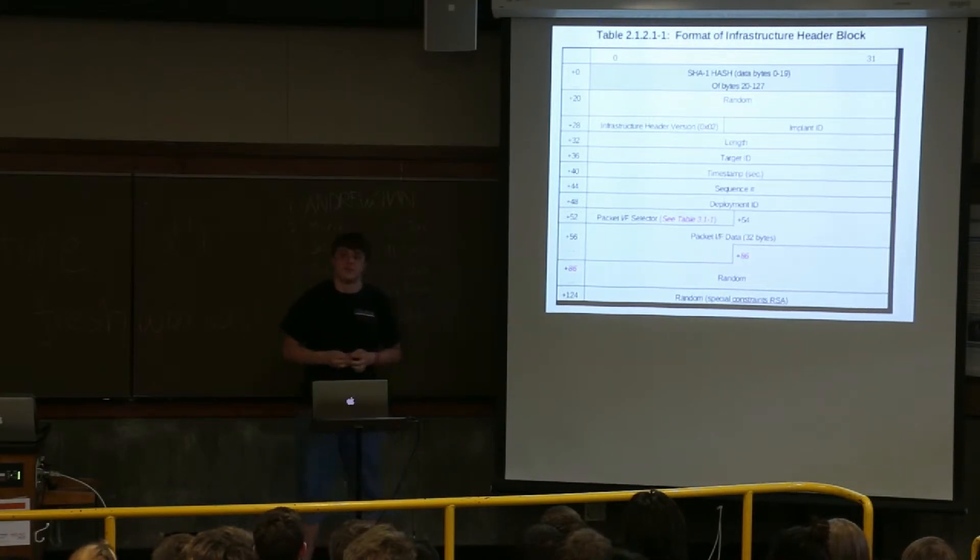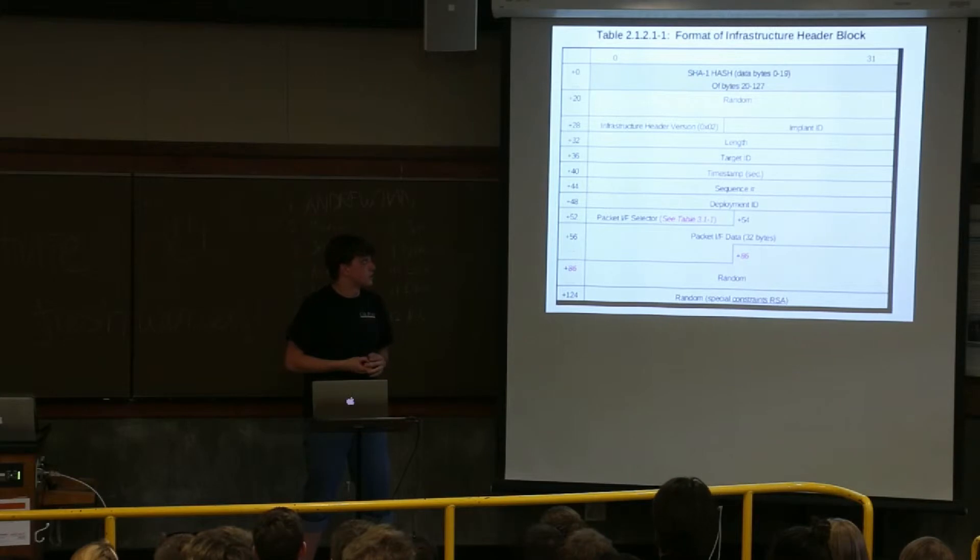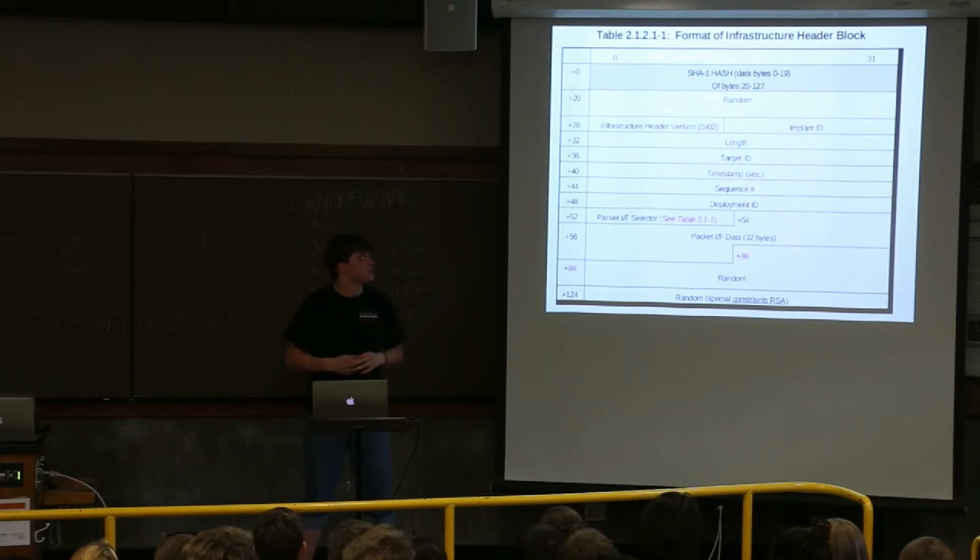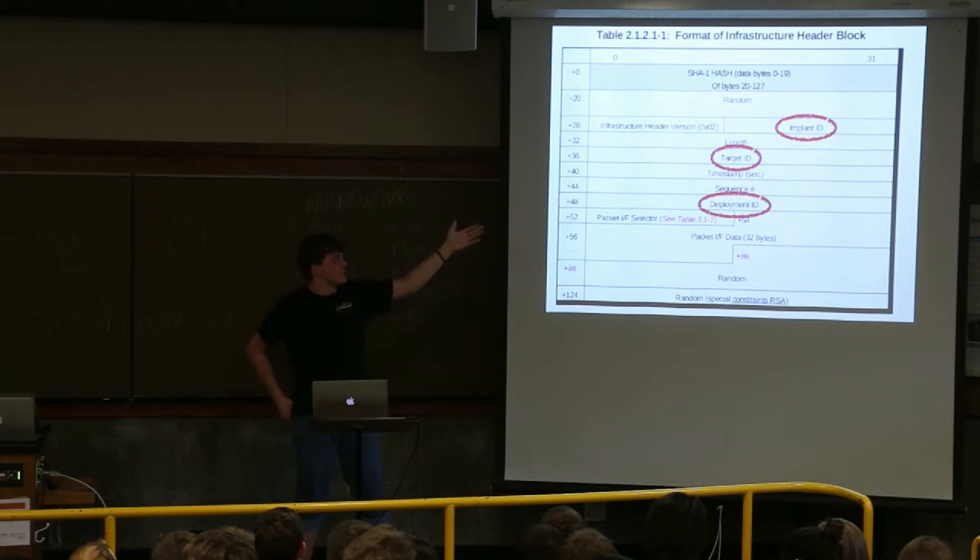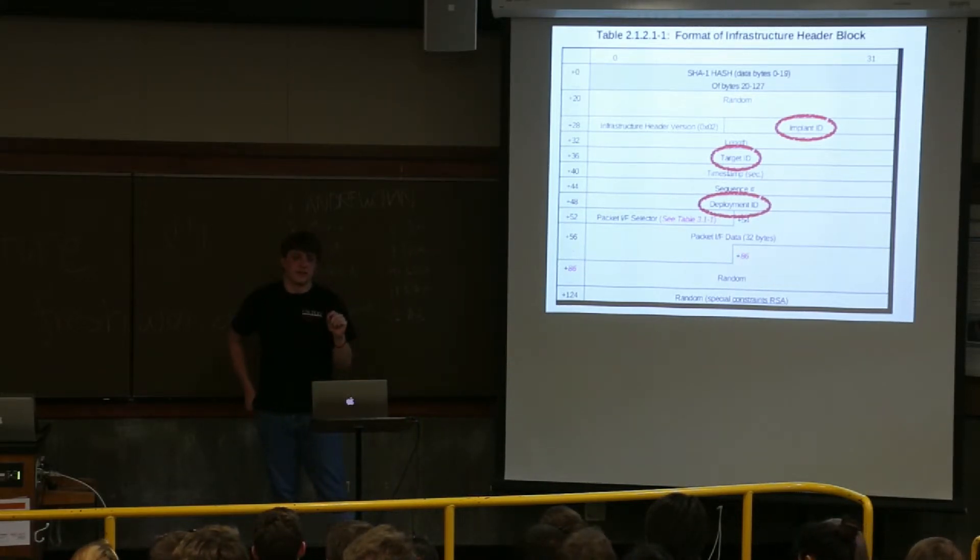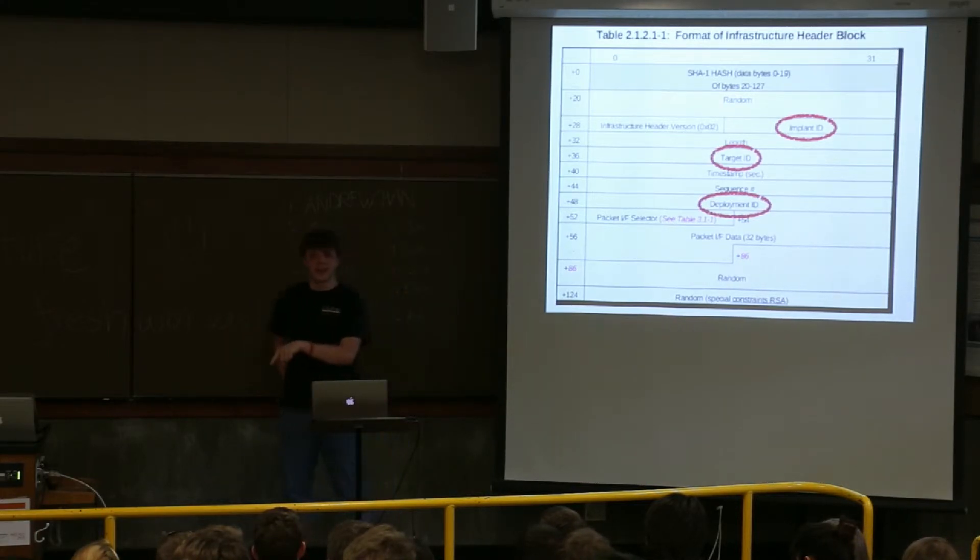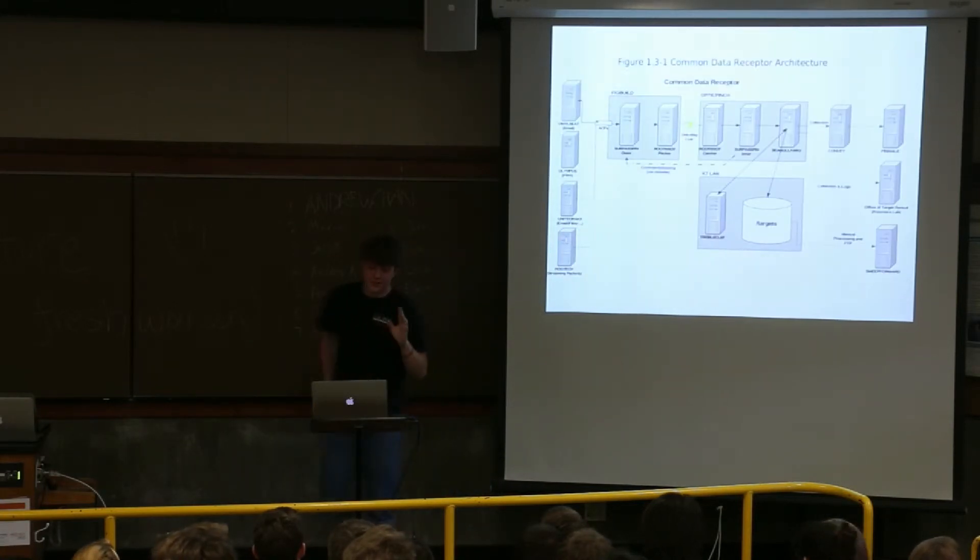Including random data to obfuscate the purpose of the packets. And all the packets are encrypted with really strong security and signed. And they also have these special fields. Implant ID, Target ID, Deployment ID. So this internet protocol has baked into it who they're hacking, why they're hacking it, and which time they're hacking them. You know, this is a big number for Deployment ID. That goes up really high.